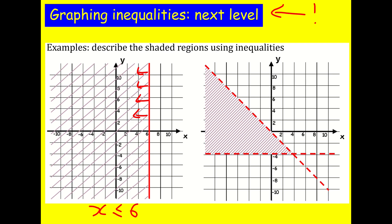One more example, because this is building quite quickly. But if you've understood the previous content, you should be happy with this. We've got a bit to do here: it's everything above this first horizontal line, which is at minus four. So it's going to be y is greater than minus four, because it's everything above the line. And it's not equal to it because it's a dotted line.